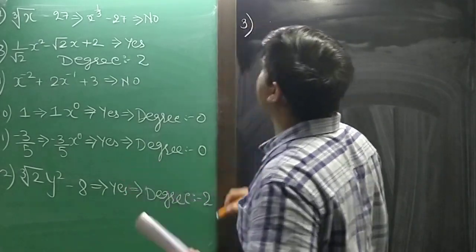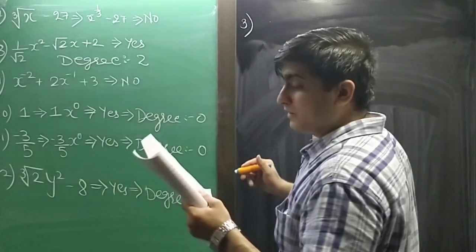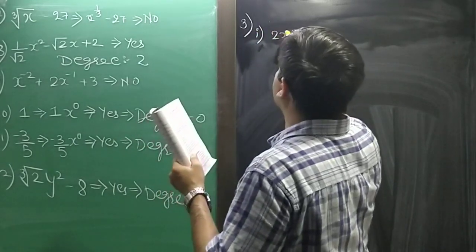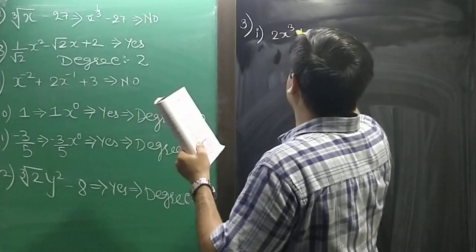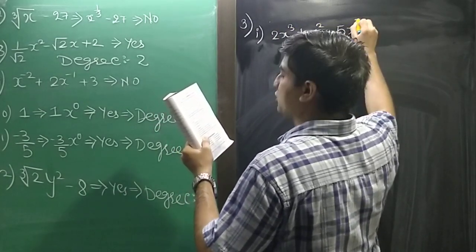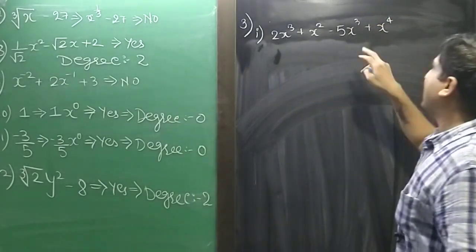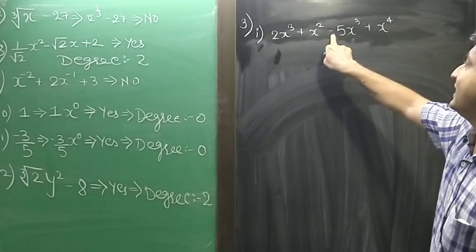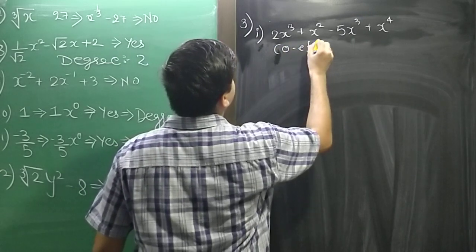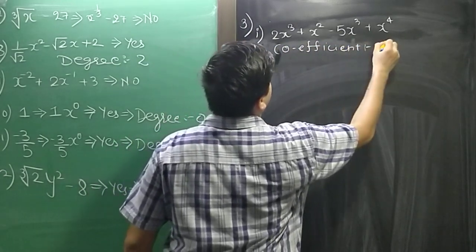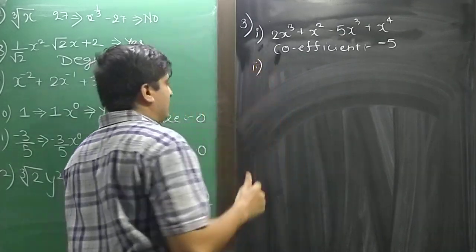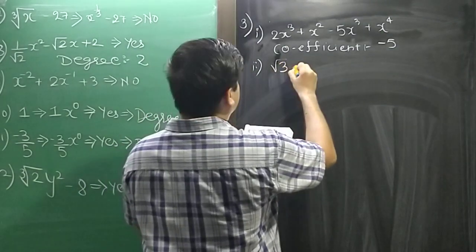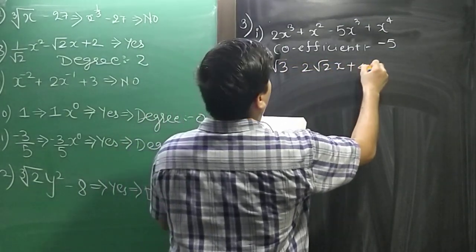Sum 1 of question 3: find the coefficient of x cubed in 2x cubed plus x squared minus 5x cubed plus x raise to 4. Looking at the x cubed terms, the coefficient is minus 5. Sum 2: the coefficient of x cubed in root 3 minus 2 root 2 x plus 4x squared — the coefficient is minus 2 root 2.